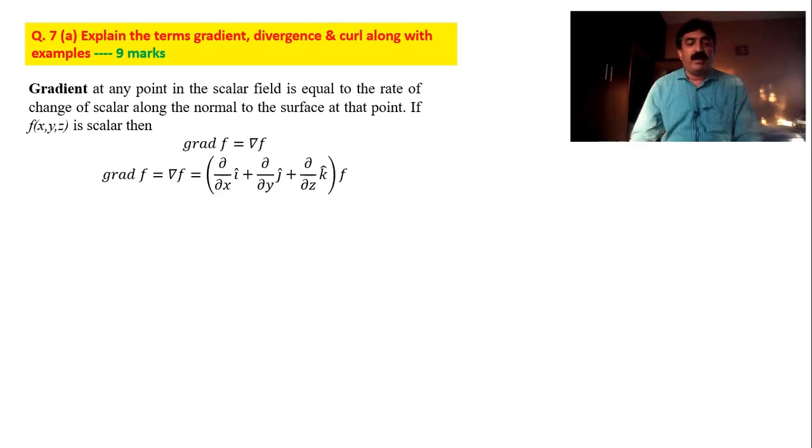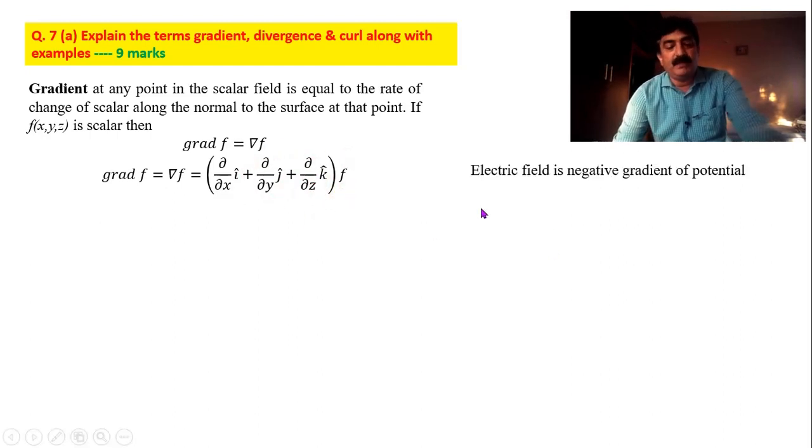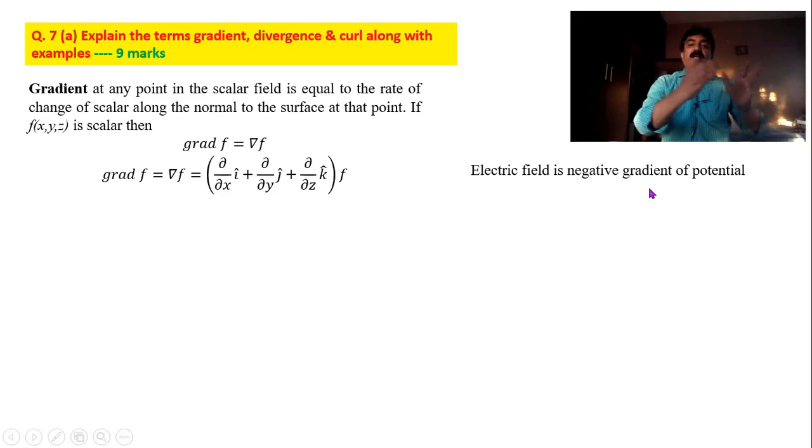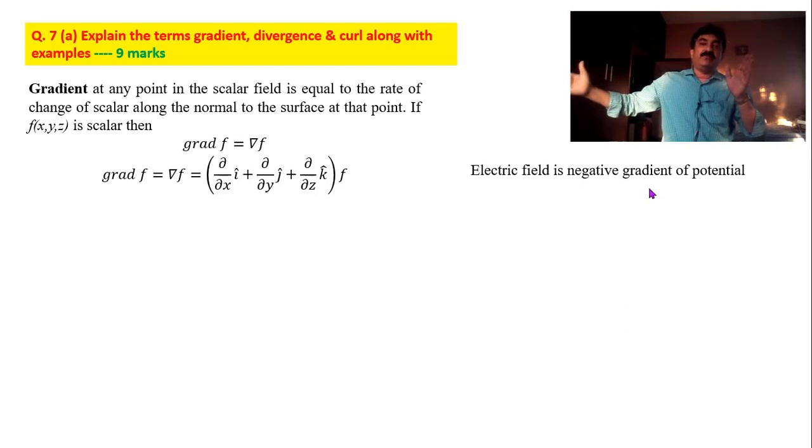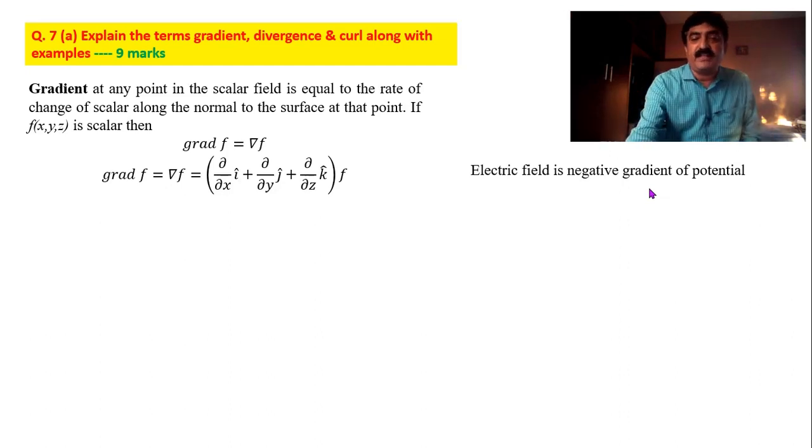This is simple multiplication not dot product nor cross product. Simple multiplication. Del is nothing but ∂/∂x i + ∂/∂y j + ∂/∂z k multiplied by f. This is a simple multiplication. And example I told you electric field is the negative gradient of potential. Negative gradient means in the direction of electric field potential is decreasing. That means if you go in the direction of electric field as you move away from the charge potential is decreasing.